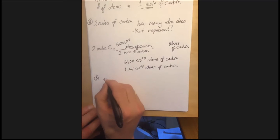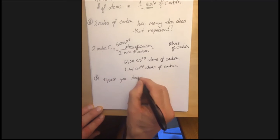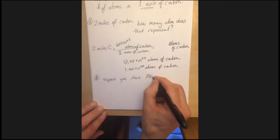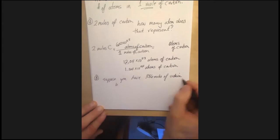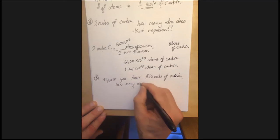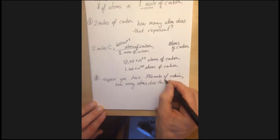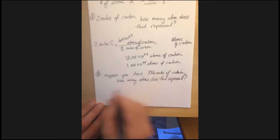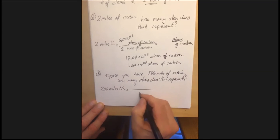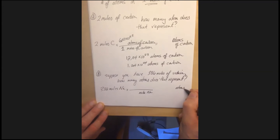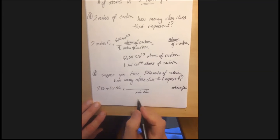So that was question number A. B is, suppose you have 3.86 moles of sodium, how many atoms does that represent? Fair enough? Same process. Okay. 3.86 moles of sodium times moles of sodium on the bottom. And I'm trying to get to, what am I trying to get to? Atoms. Atoms of sodium. And so 3.86 moles of sodium, one mole of sodium. It's the number is defined by that. So it's 6.02 times 10 to the 23rd atoms of sodium.